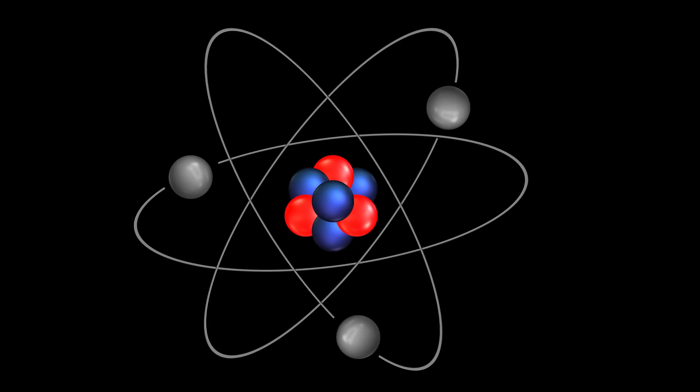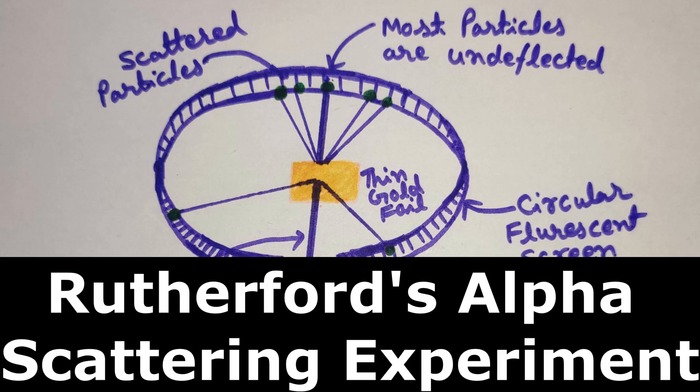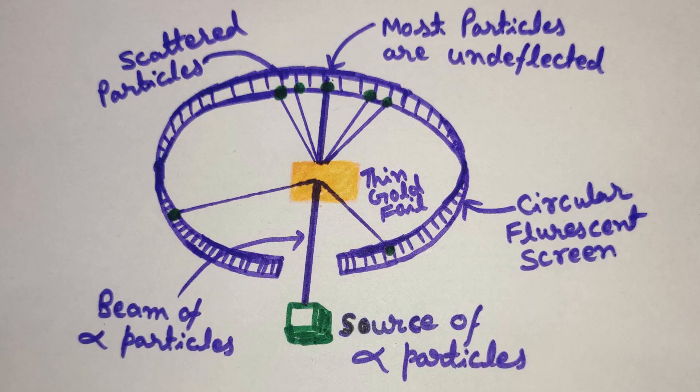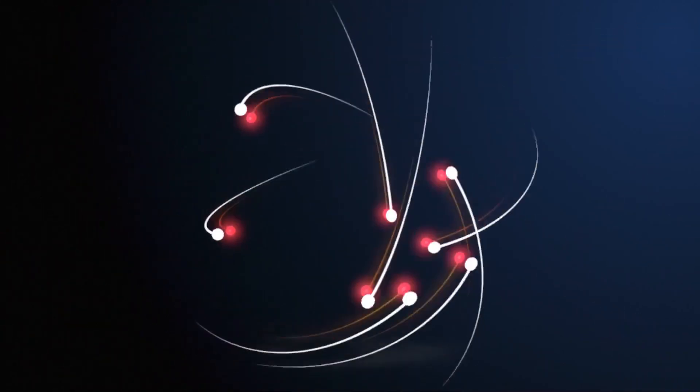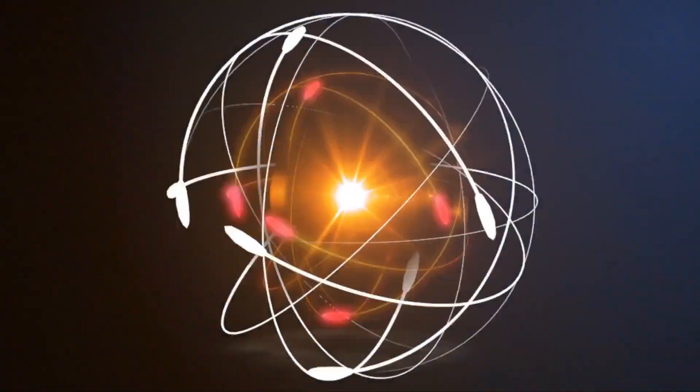That atoms are mostly empty space was first discovered through Rutherford's alpha scattering experiment. While performing this experiment, he bombarded high-energy alpha particles on a very thin gold foil. He observed that most of the alpha particles passed through the foil without any deflection, showing that most of an atom is empty space.